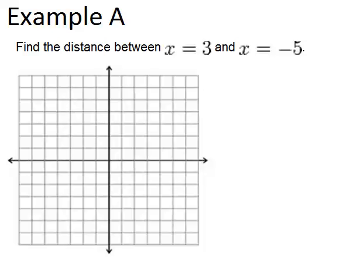Now anytime you have equations that are just x equals, they're going to be vertical lines. So in this case we have a vertical line at x equals 3. The reason for that is because if you think about it, all the points on this line have x coordinates of 3. So this is the line x equals 3.